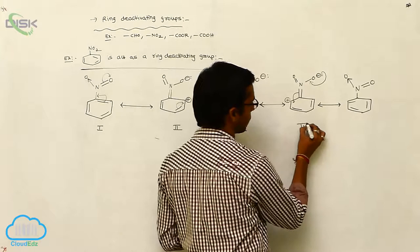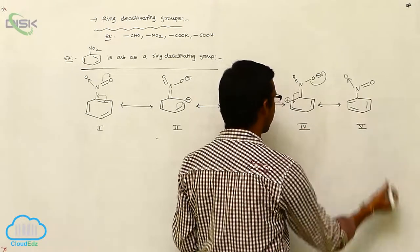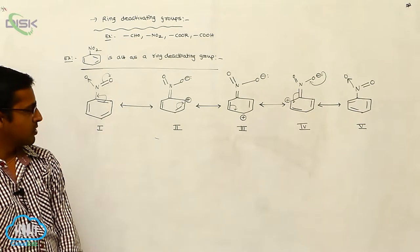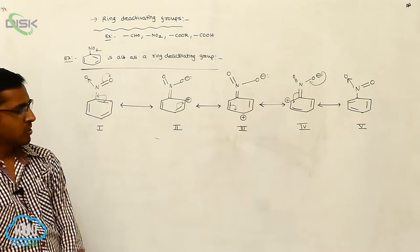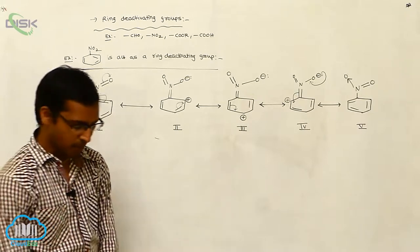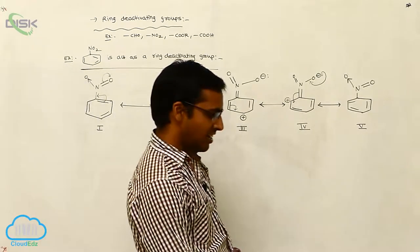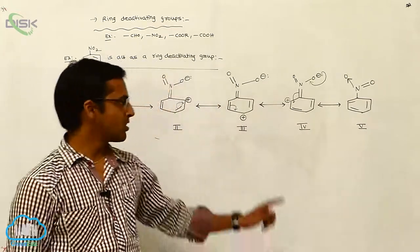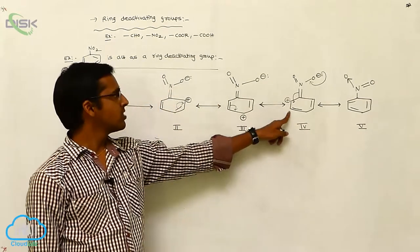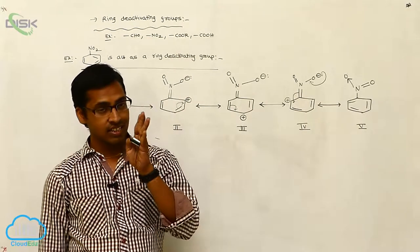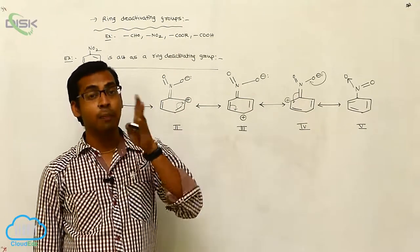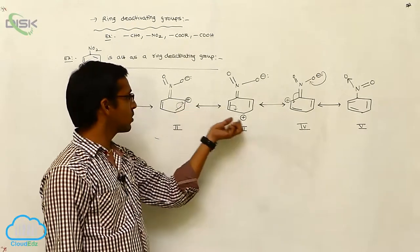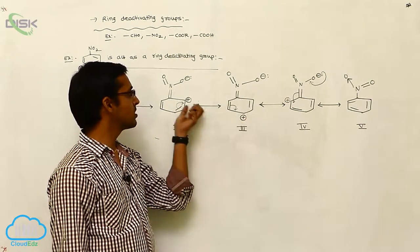Now observe. At the second and third positions — at ortho and para positions — a positive charge is present. The presence of positive charge means activity decreases. But at the meta position, there is no positive charge. So the electron density increases at the meta position, while electron density decreases at ortho and para positions due to the presence of positive charge.